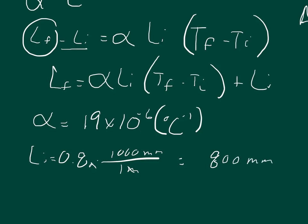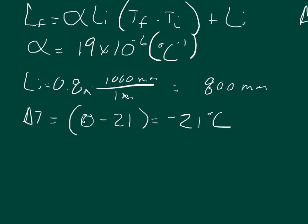And the last thing we need is the change of temperature, so we can say that the change of temperature, it started out at the final temperature was 0 degrees and we started out at 21 degrees. So our change in temperature is going to be minus 21 degrees Celsius. So we just need to plug in the numbers.